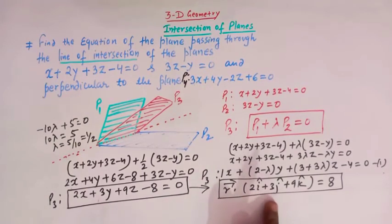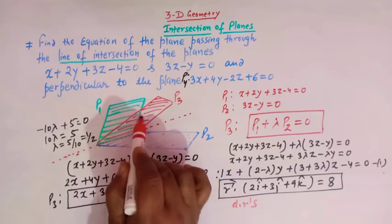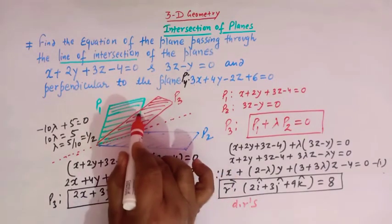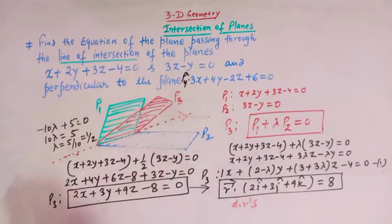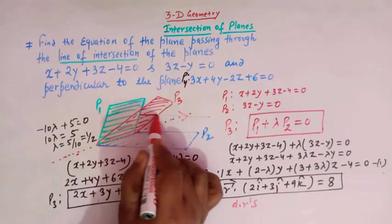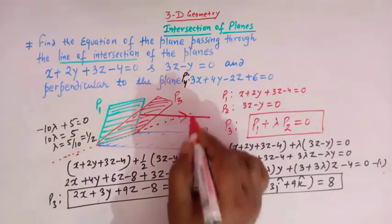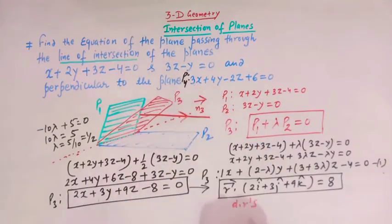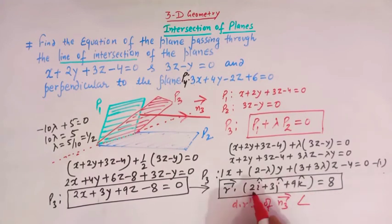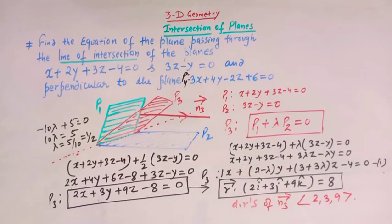From this equation we can conclude that the direction ratios of the normal vector N3 to plane P3 are 2, 3, and 9. This is how we solve this problem.